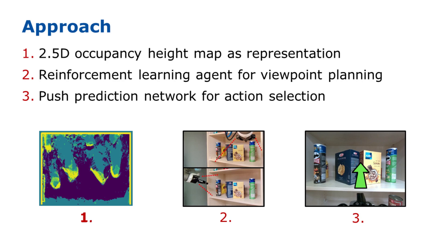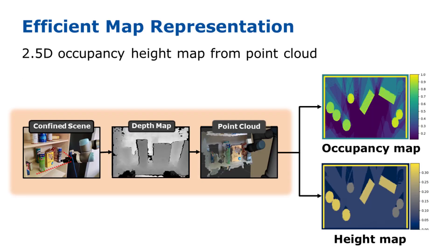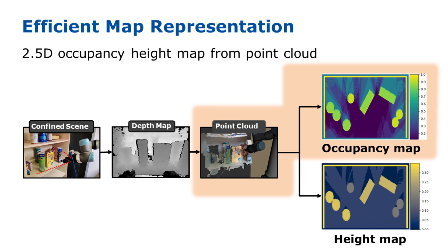Our system comprises a 2.5D occupancy height map, a reinforcement learning agent for viewpoint planning, and a push prediction network. We created a 2.5D occupancy map from a camera mounted on the robot's end effector. The acquired point cloud is orthographically back-projected into 2D with each cell assigned a log-odds probability. Additionally, we record the maximum height of each cell to estimate object occlusion based on their varying heights, since taller objects are more likely to occlude other objects than smaller ones.